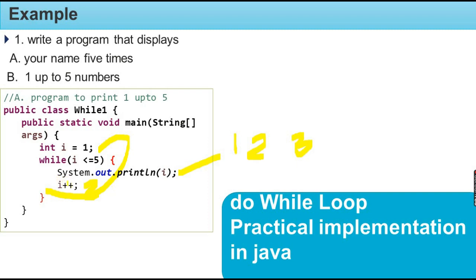Band increment makes `i = 5`. Condition check: 5 is less than or equal to 5 — true. Statement executes and 5 is printed. Then band increment makes `i = 6`. Now condition: `i = 6` is greater than 5 — false. The condition is false, so the compiler exits the while loop.